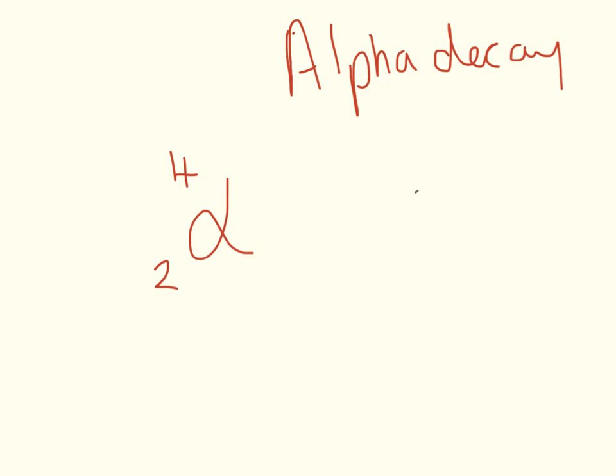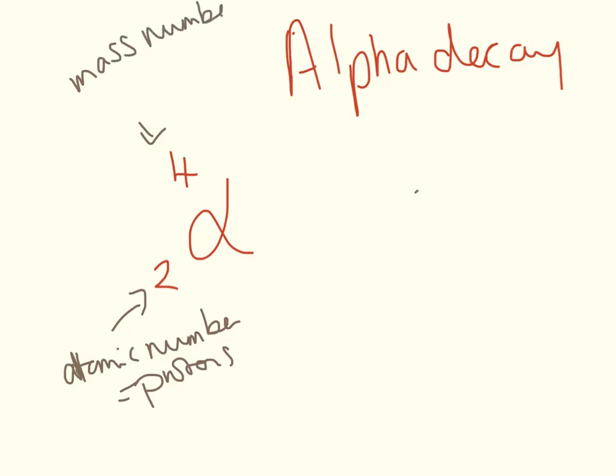This is alpha decay, written with the symbol alpha, 4 and 2. You should be familiar that this is the atomic number which is equal to the number of protons, and this here is the mass number which is equal to the neutrons plus the protons. Some of you may recognize that an alpha particle has the same mass and atomic number as a helium particle.